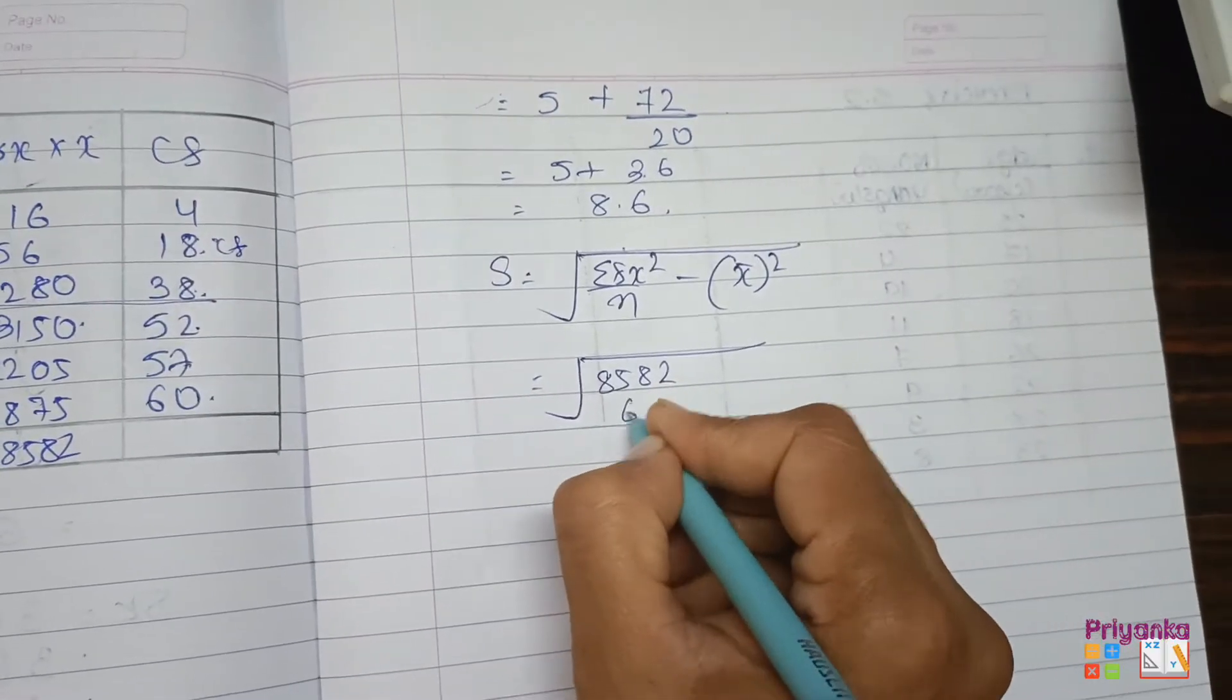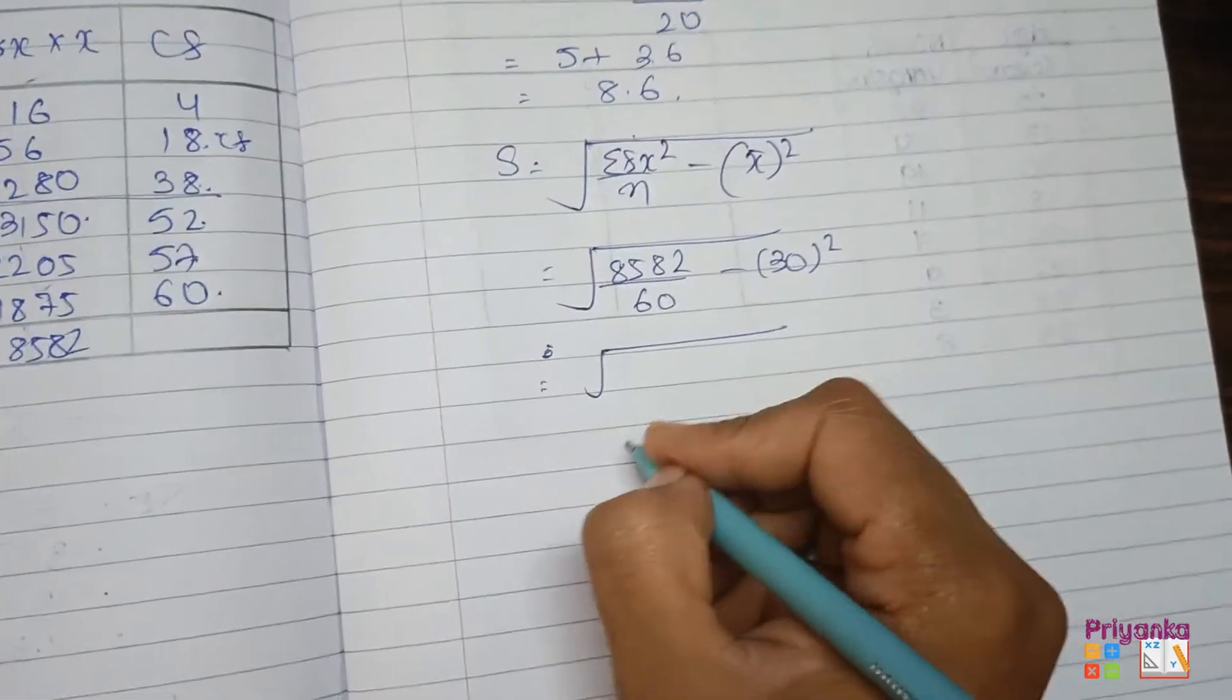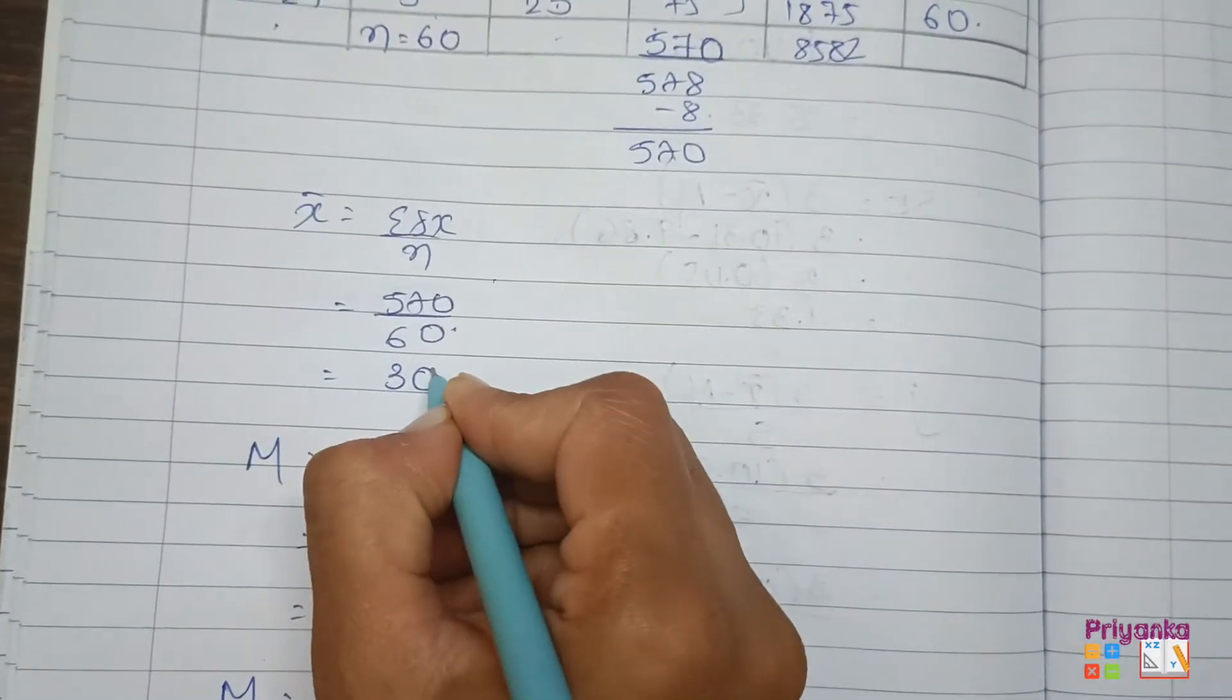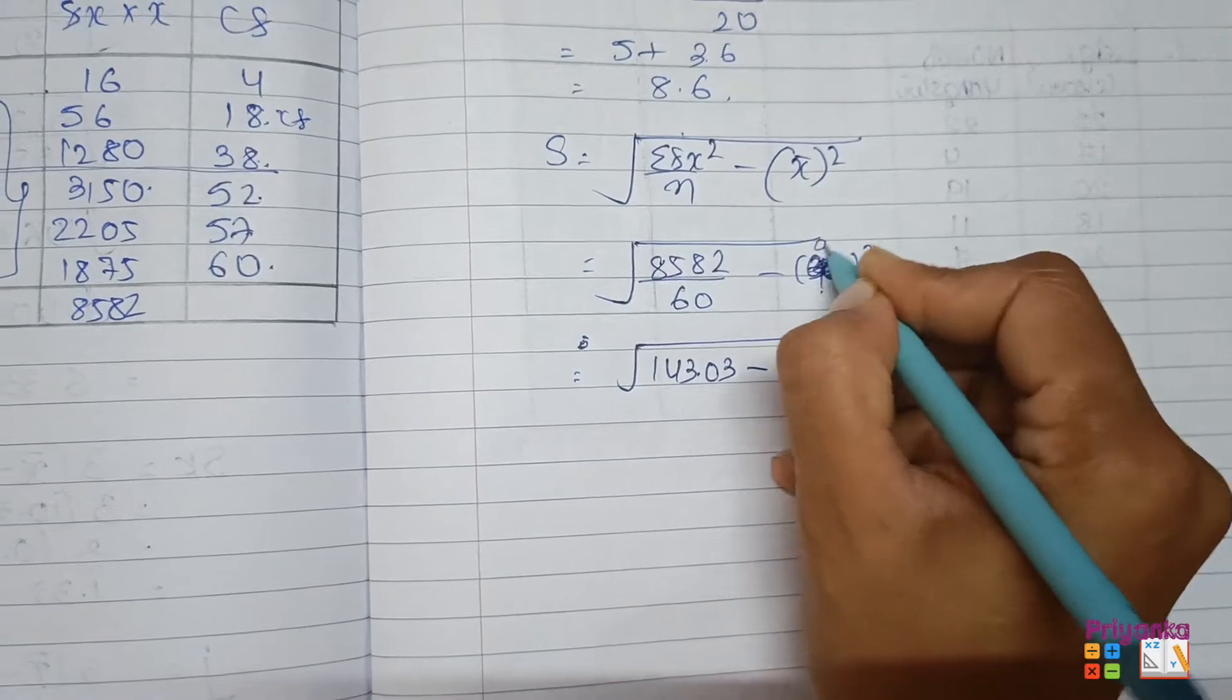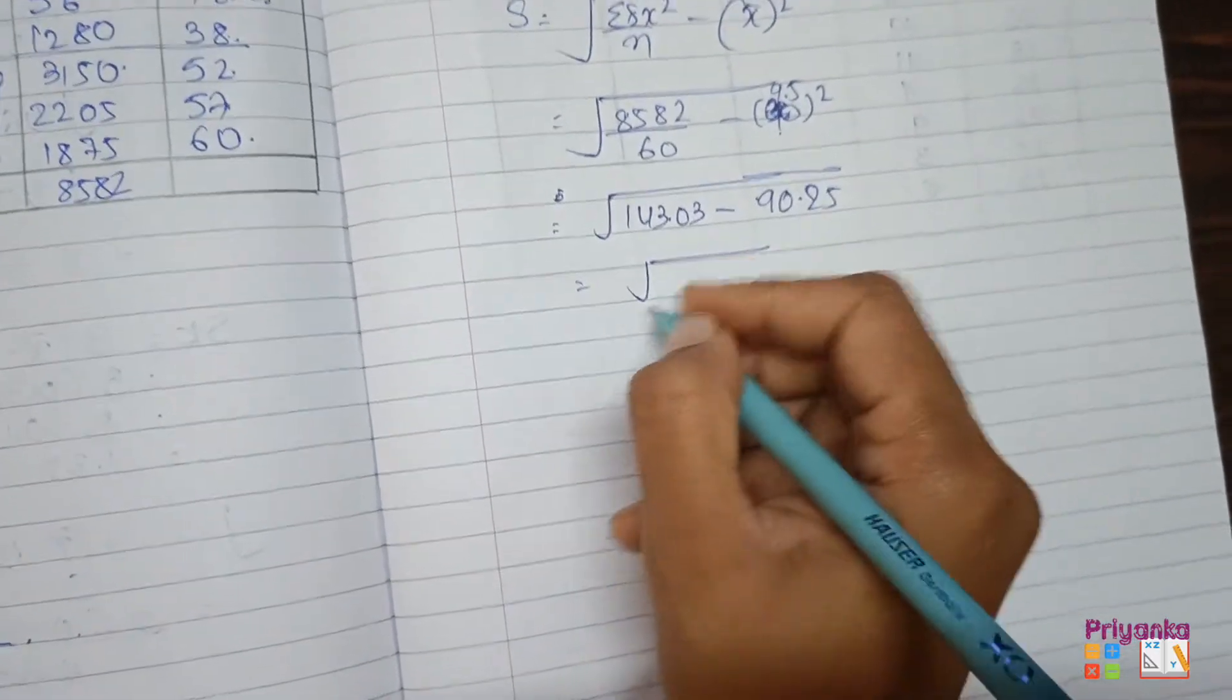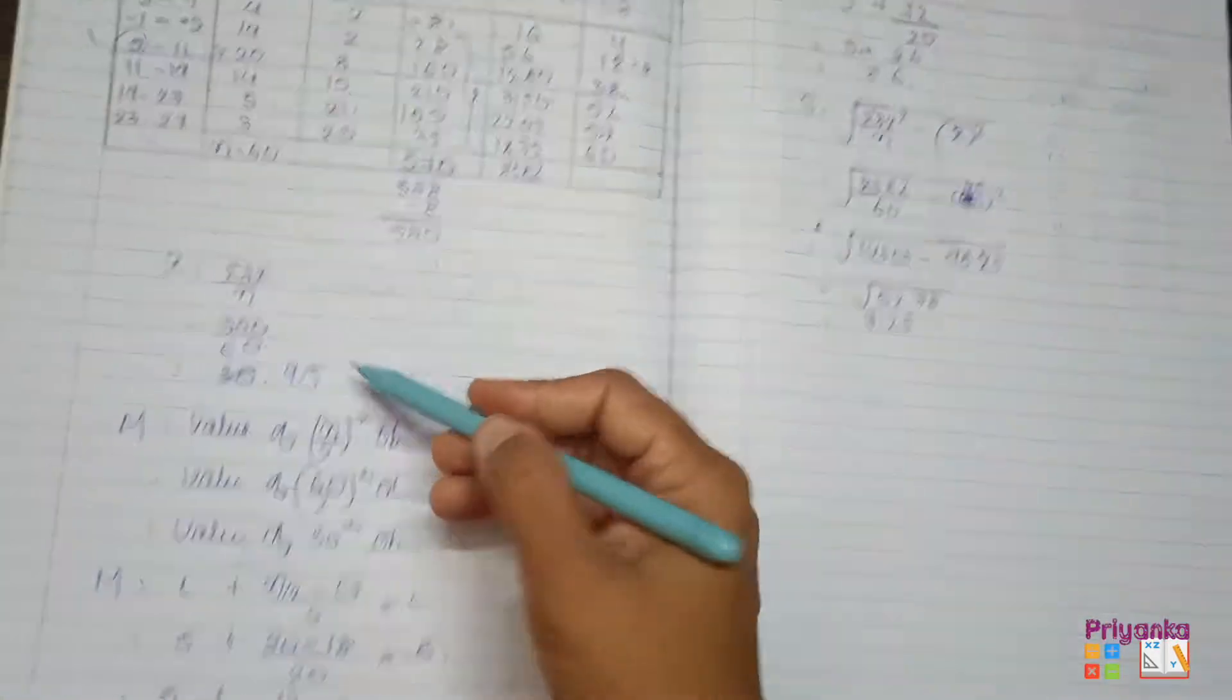8582 divided by n that is 60, minus the mean we found is... in the hurry I wrote here 30, it is 9.5. So back again here 9.5. So 9.5 multiplied by 9.5 will be 90.25. Now subtract, you will get 52.78, and the root of it will be 7.25. So here we are ready with the standard deviation, mean, and median.